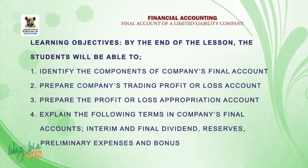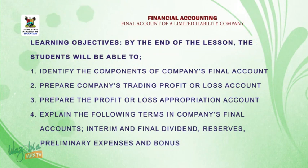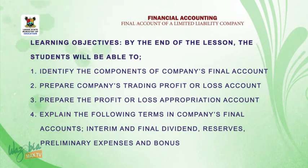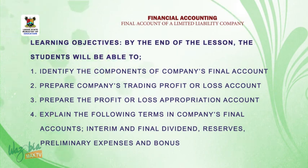By the end of the lesson, I will expect you, students, to be able to identify the components of a company's final account. You should be able to prepare a company's trading profit or loss account, prepare the profit or loss appropriation account, and explain the following terms: interim and final dividend, reserves, preliminary expenses, and bonus.